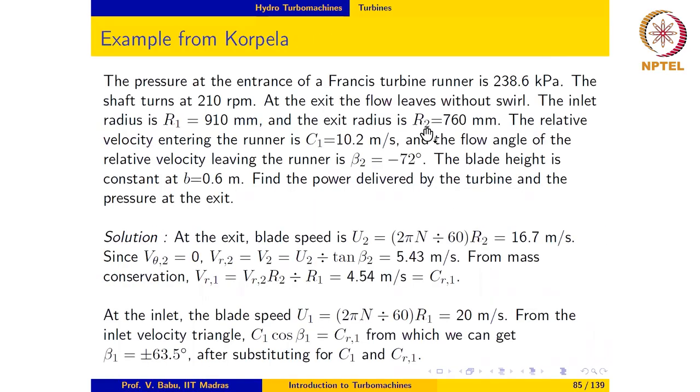We now turn to the next example. The pressure at the entrance of a Francis turbine runner is 238.6 kPa. The shaft turns at 210 rpm.